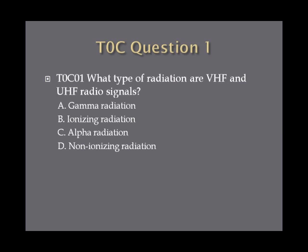Question one. What type of radiation are VHF and UHF radio signals? A, gamma radiation. B, ionizing radiation. C, alpha radiation. Or D, non-ionizing radiation?